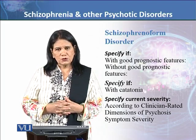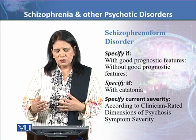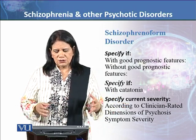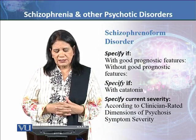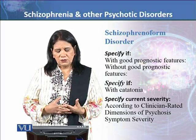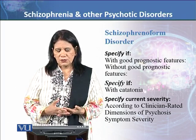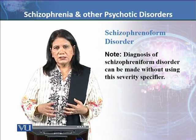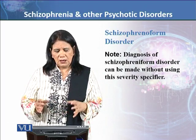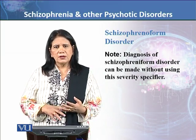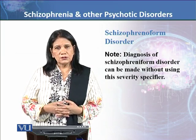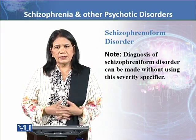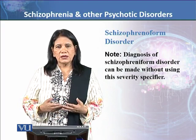You need to specify whether the disorder presents with good prognostic features. You should also specify if catatonia is present, and note the current severity according to clinician-rated dimensions of psychotic symptom severity. However, severity is not critical for the initial diagnosis — if the patient reports hallucinations, delusions, or positive and negative symptoms, you diagnose and begin intervention even without a formal severity assessment.